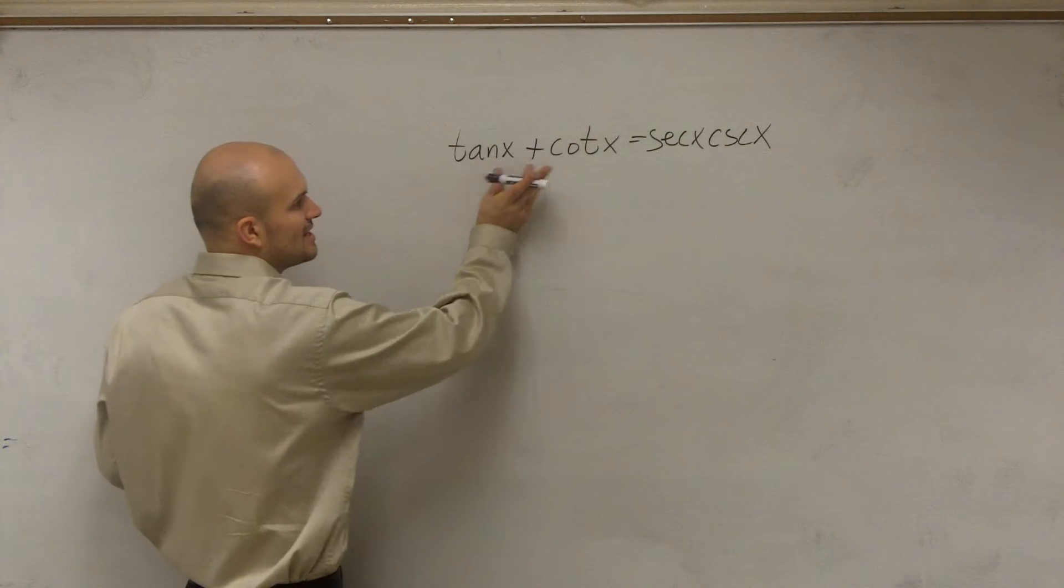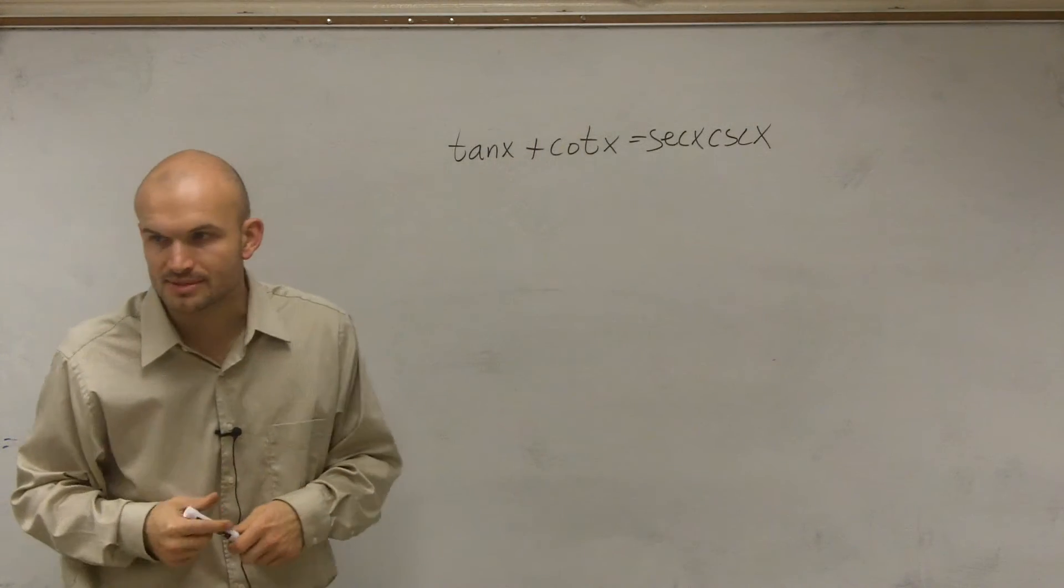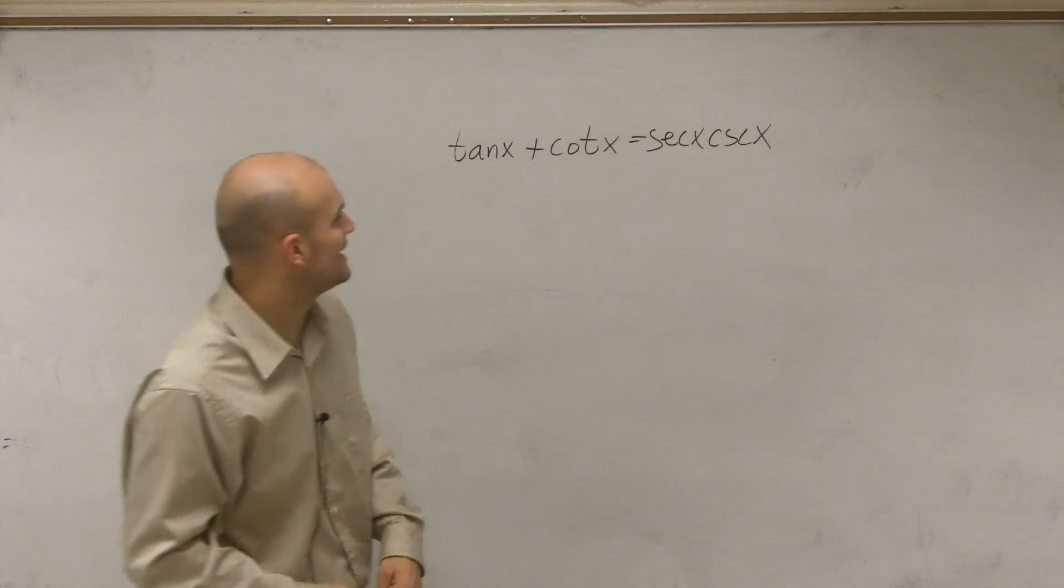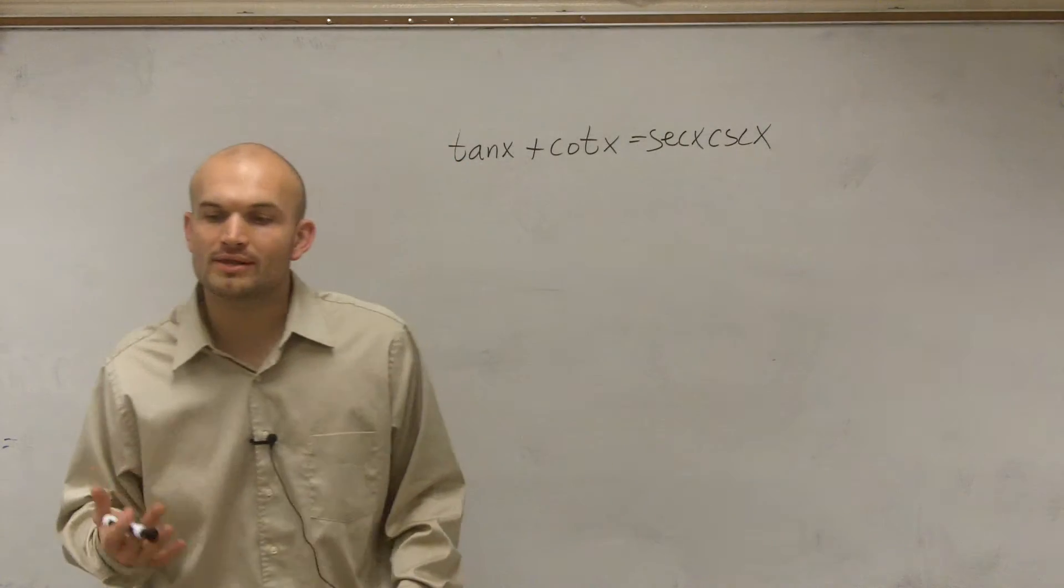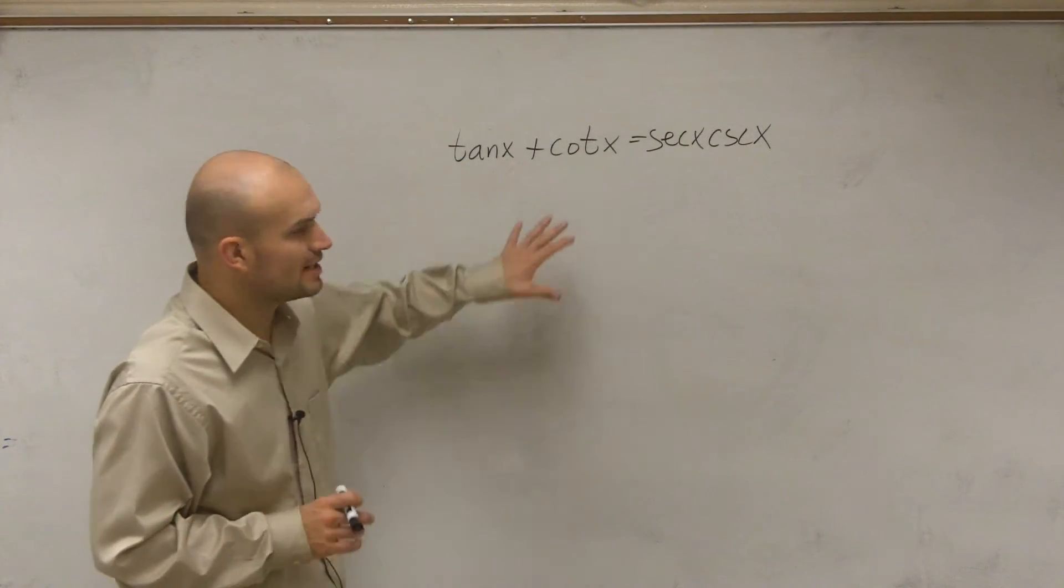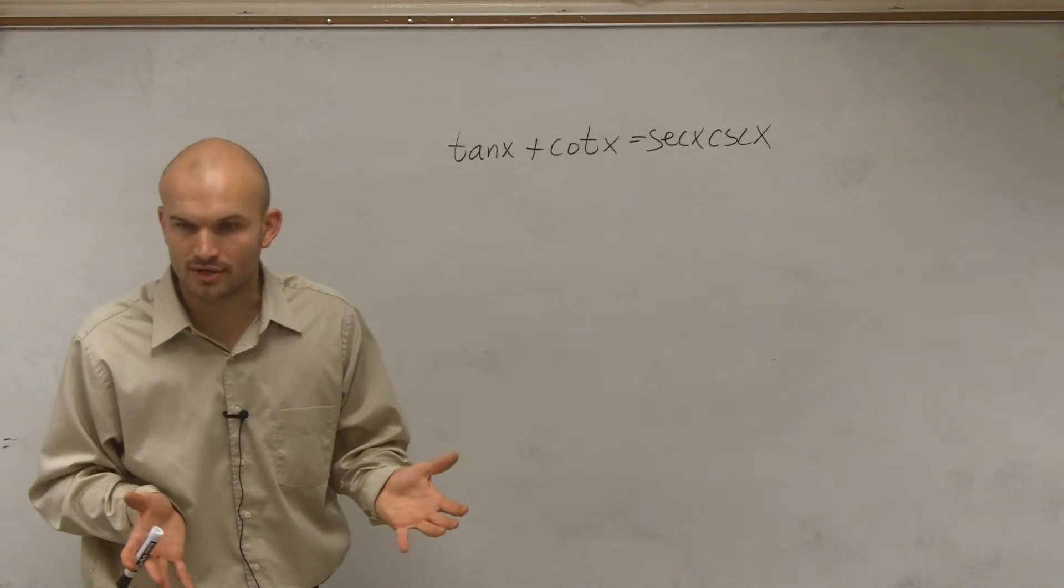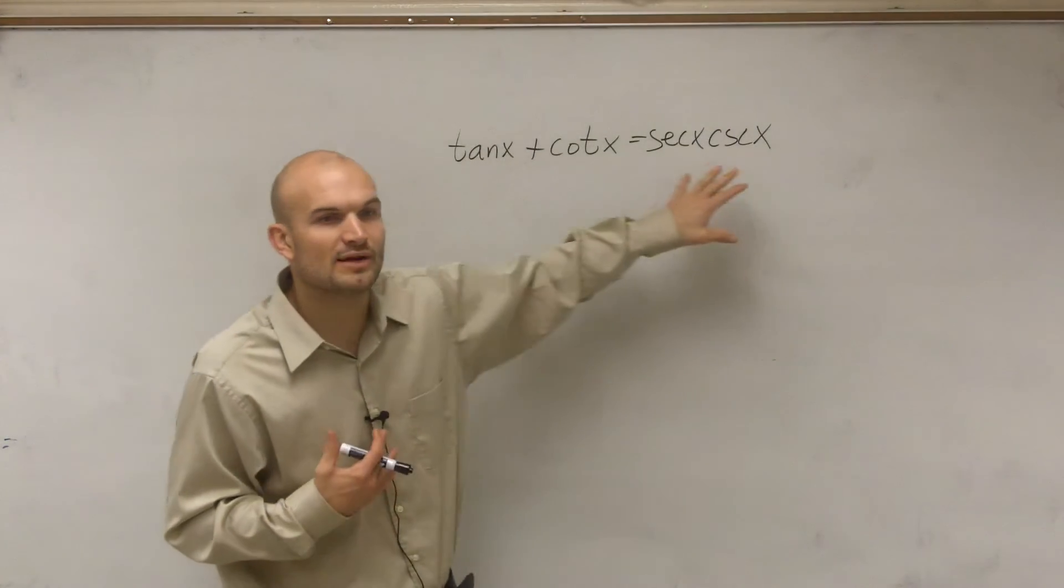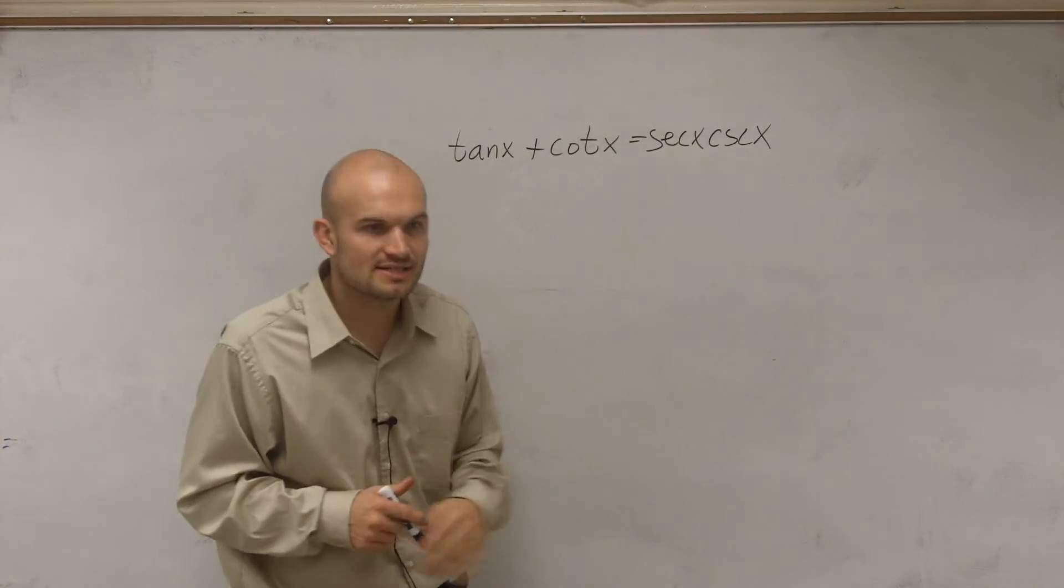What the problem comes in is tangent and cotangent are not like terms. So we can't combine tangent and cotangent. So one of the next helpful hints to do is when you're looking at a term, you've decided what side you're going to work on. You know what operations you're going to do. What the next thing you need to do, Lauren,